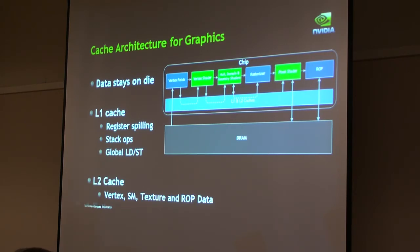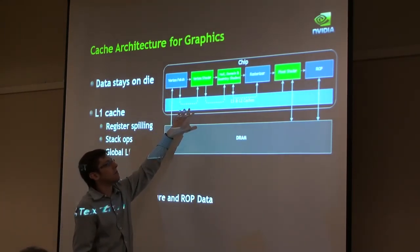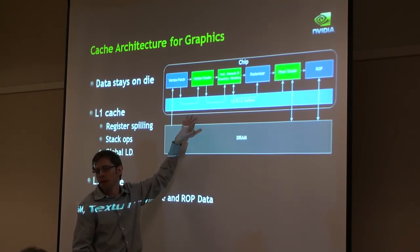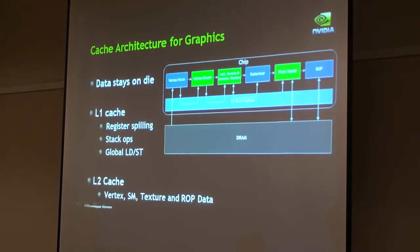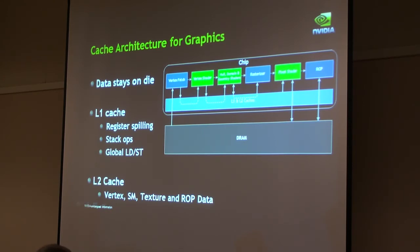One big motivation for the cache was the geometric realism objective for graphics, as you see with these dotted lines in the diagram. We have special modes to ensure that geometry traffic is guaranteed to stay on chip. You can imagine big FIFOs of data going from one stage to the next — if you have enough storage on chip to hold the FIFO, everything's wonderful. But as soon as you're one byte short, everything has to go off to memory and come back, costing a lot of power and bandwidth that you'd rather have for texture and ROP on the pixel side. The cache has special capabilities for geometry stage data to ensure it stays held on chip and doesn't have to go off the die.